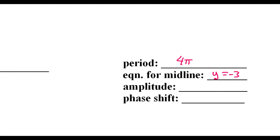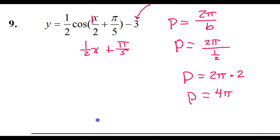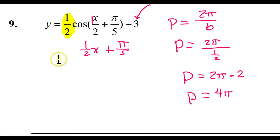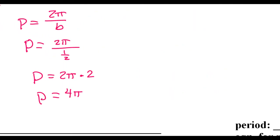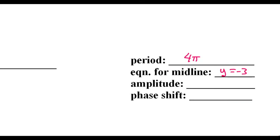How about the amplitude? The amplitude is going to come from the a value. So the amplitude will be 1/2. That means we'll go up 1/2 and down 1/2 from the midline. Let's record that the amplitude is 1/2.